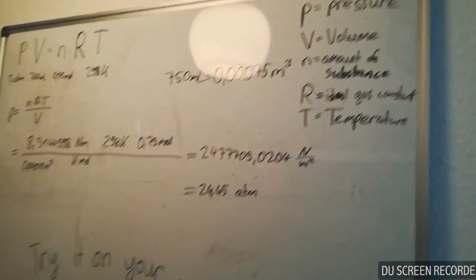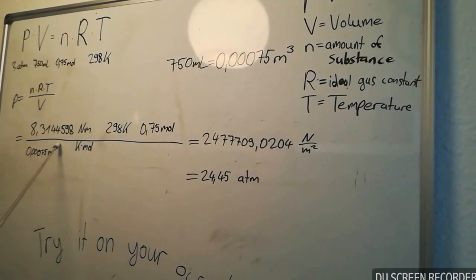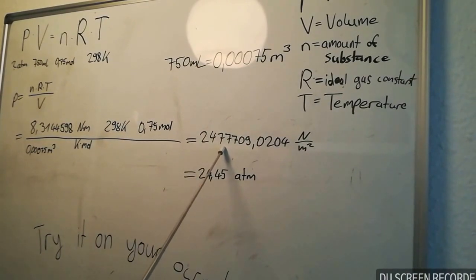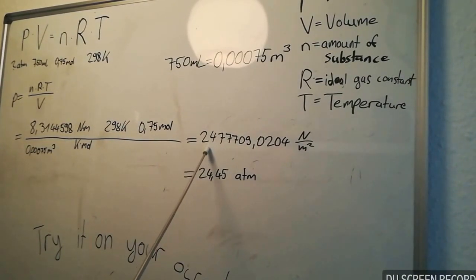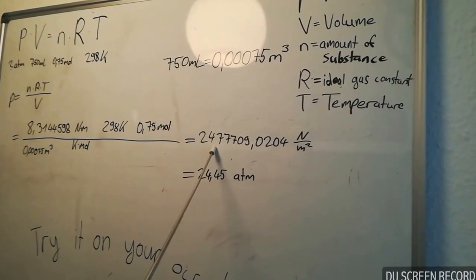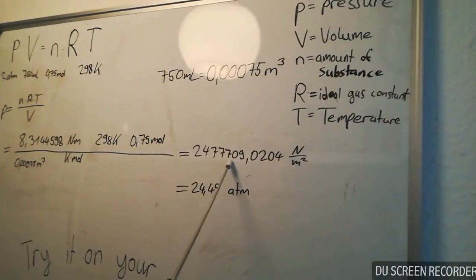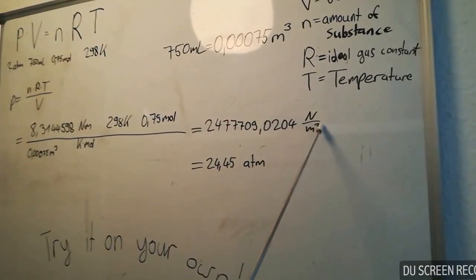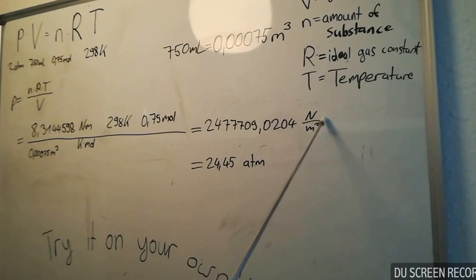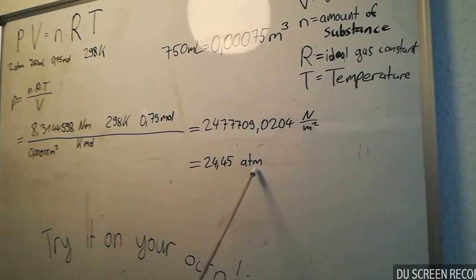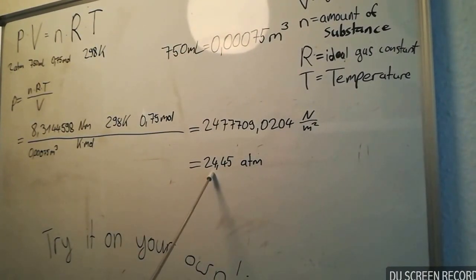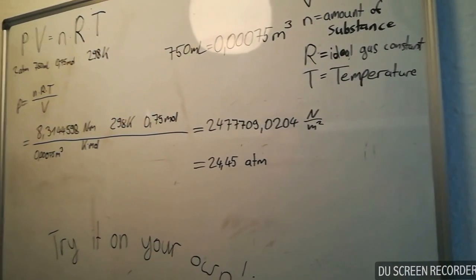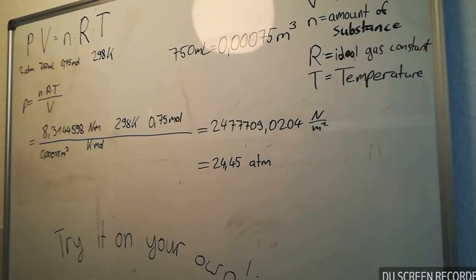Now you only have to put the values into the formula and multiply. The result is 2,477,709.0204 newton per square meter. Now you only have to convert it to atm, which gives 24.45 atm. Thanks for your attention. I hope you could learn something and now try it on your own.